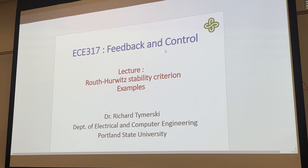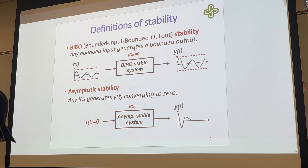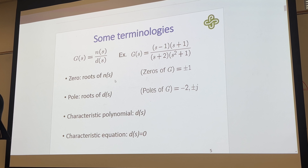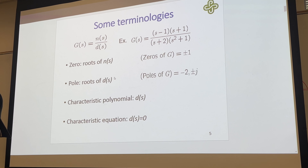So we're discussing stability — it's a very important specification. An unstable closed loop is pretty useless, but an unstable open loop can be stabilized. There are multiple definitions of stability, but when we're considering our linear time-invariant systems as we're doing in this class, these definitions actually come out to be the same. Bounded input bounded output (BIBO) stability means any bounded input generates a bounded output with initial conditions set to zero, and asymptotic stability means any initial condition generates a y(t) that converges to zero. For linear time-invariant systems, both of those definitions are satisfied.